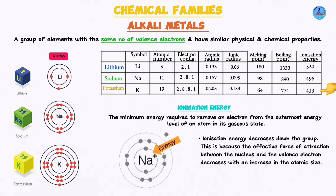Out of these three, potassium is the most reactive. The reactivity of metals is tied to how easily they lose their valence electron. Potassium has the lowest ionization energy because its valence electron is furthest from the nucleus and the force of attraction is weakest, so it loses its valence electron most easily. This brings us to the end of part one; in part two we will discuss the physical and chemical properties of alkali metals.